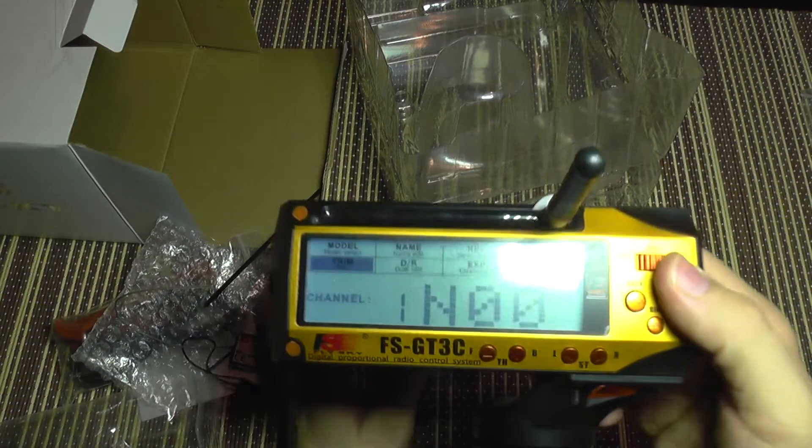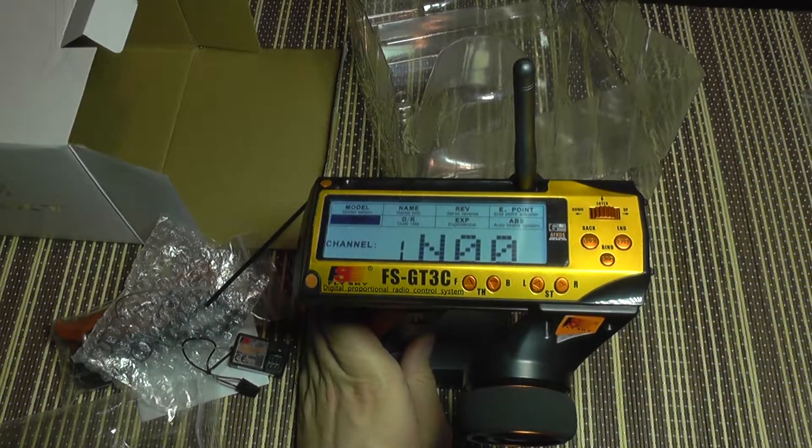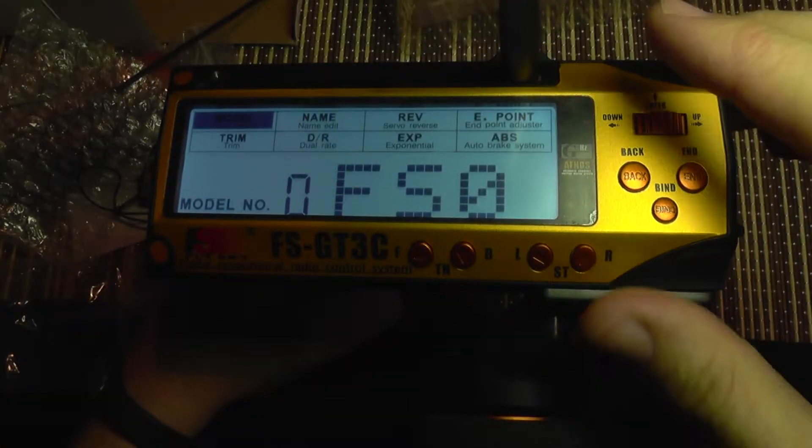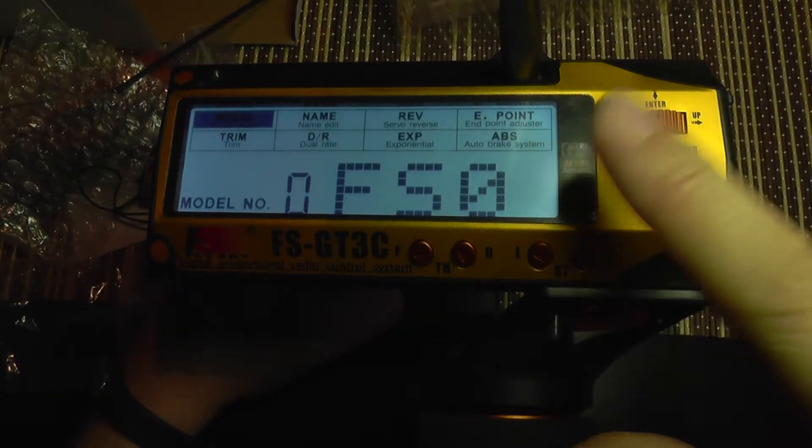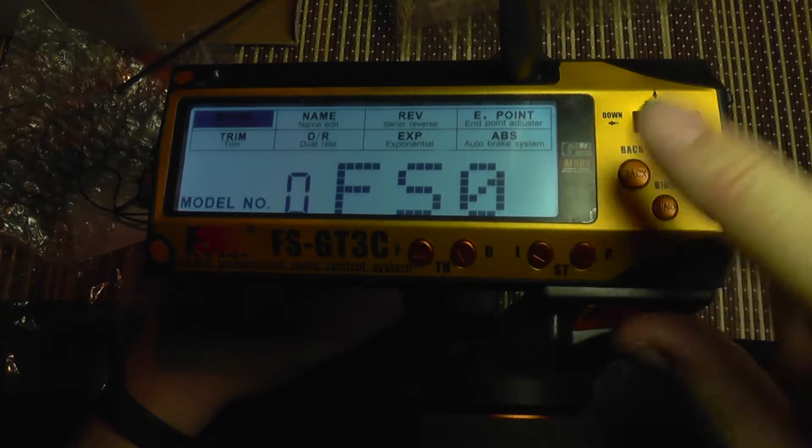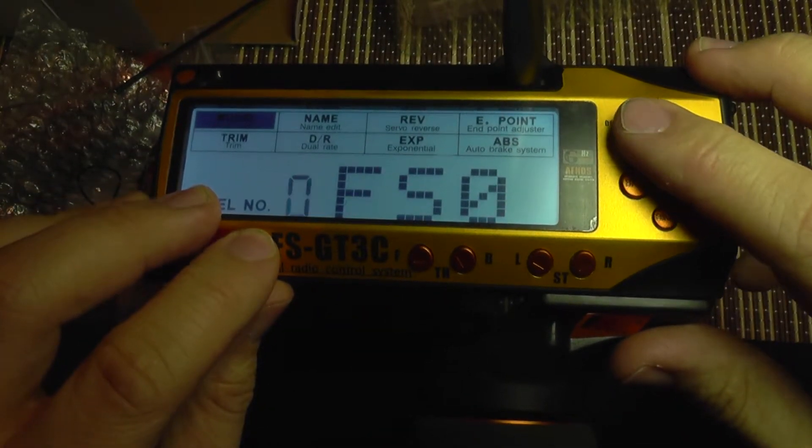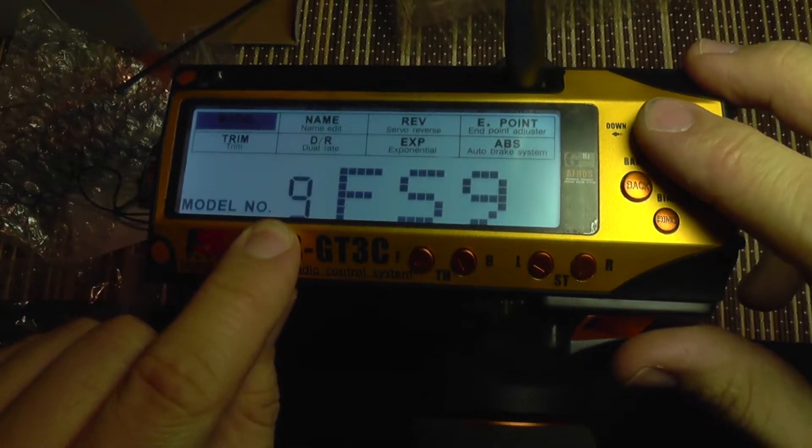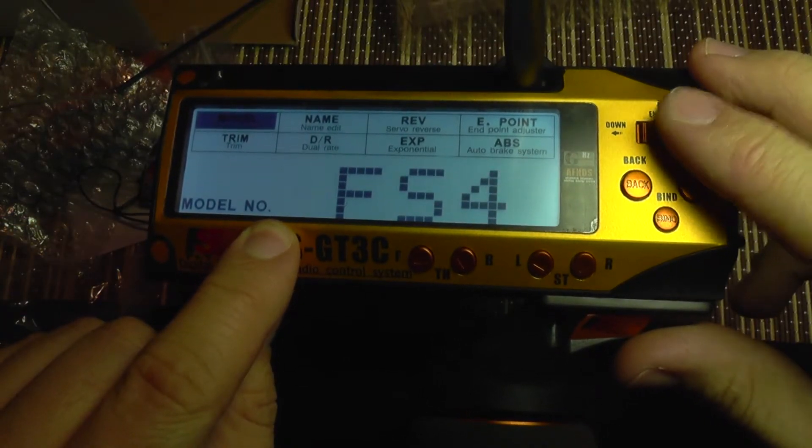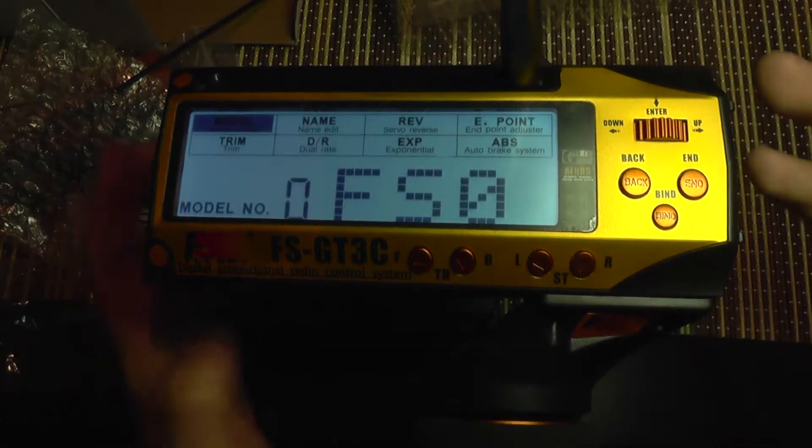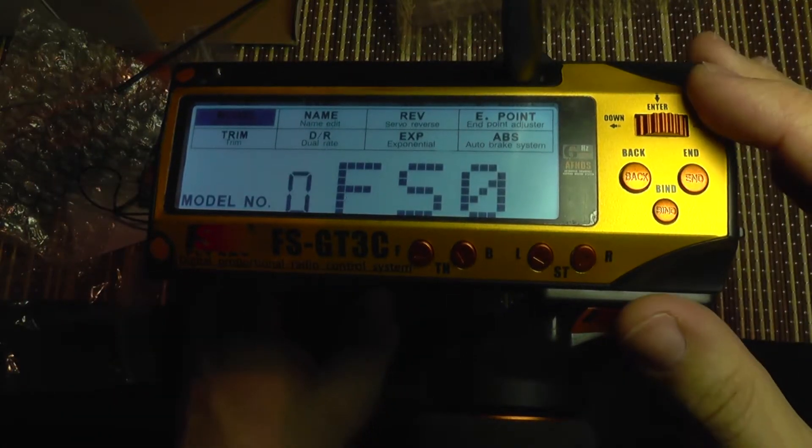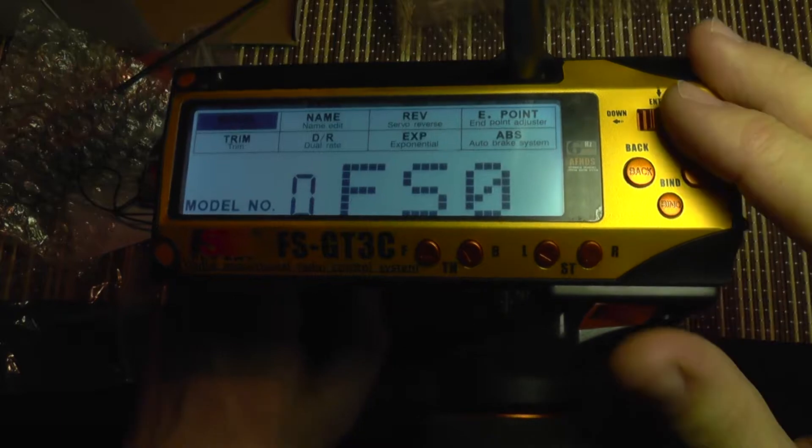It's very easy to configure. Let's zoom in. This should be better. So first you have model. The transmitter has multiple memories and you can see it has 10 memories from 0 to 9.